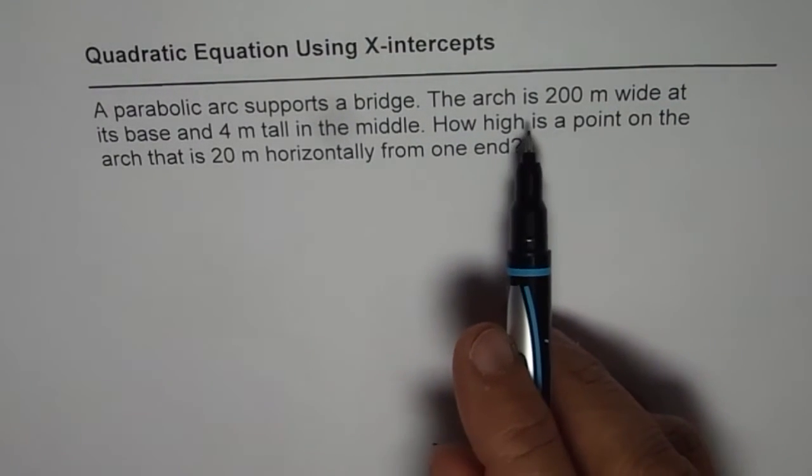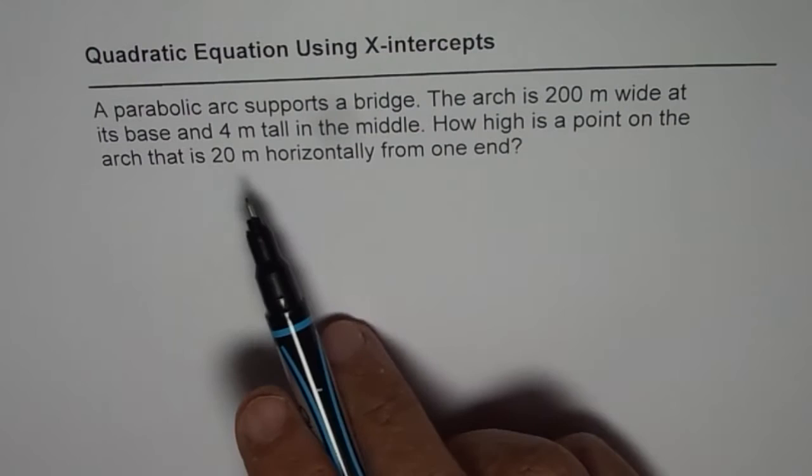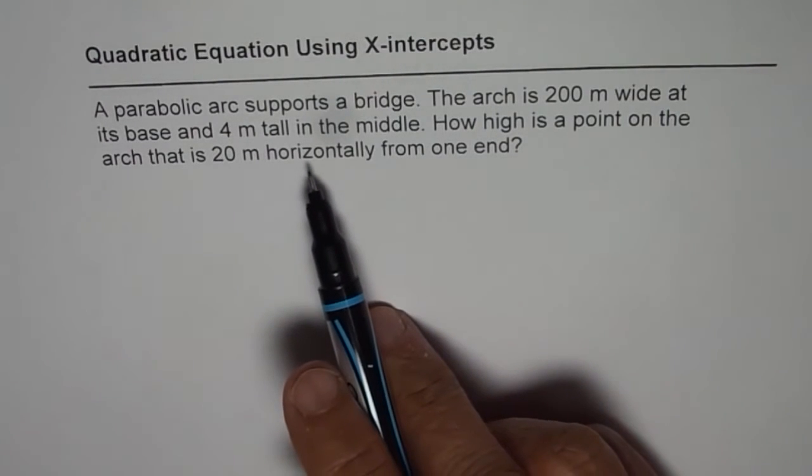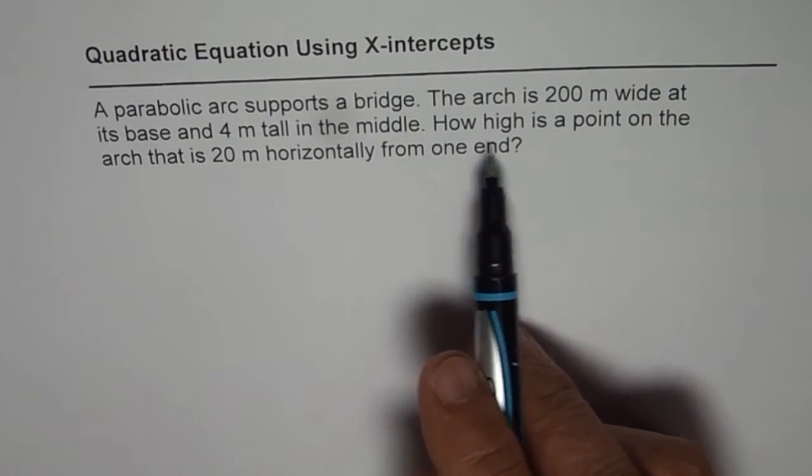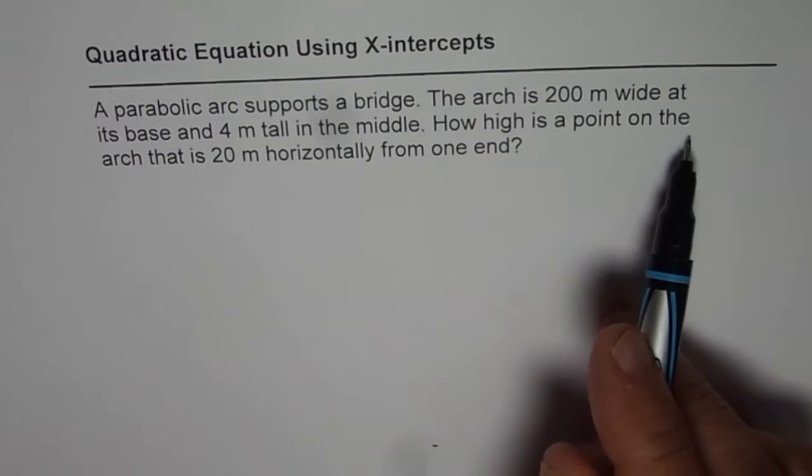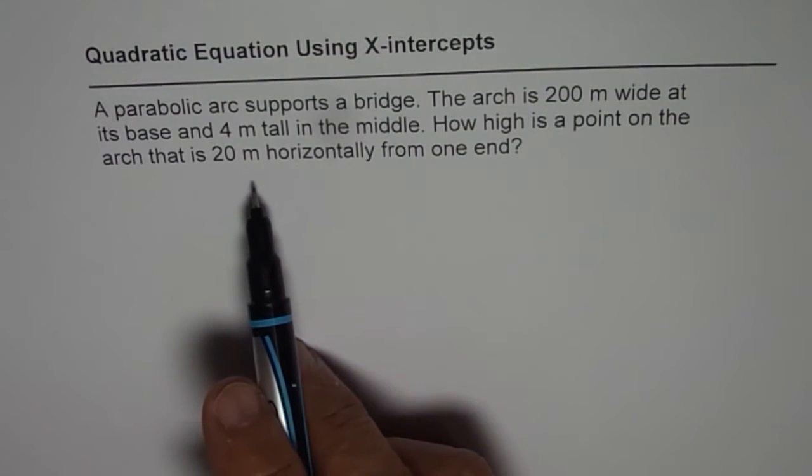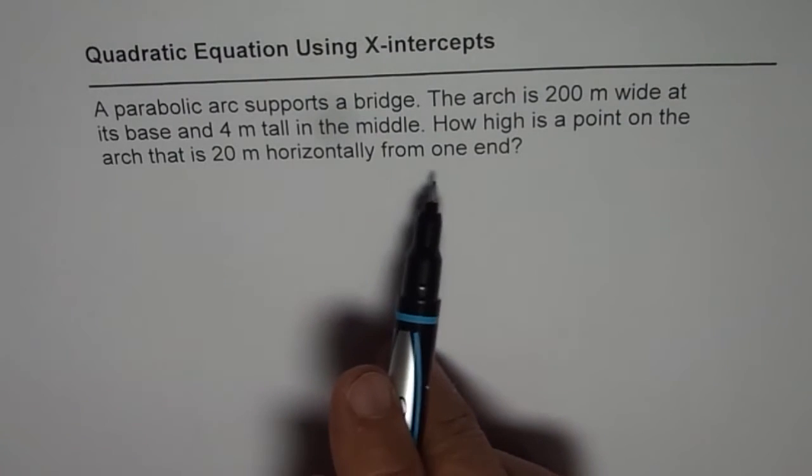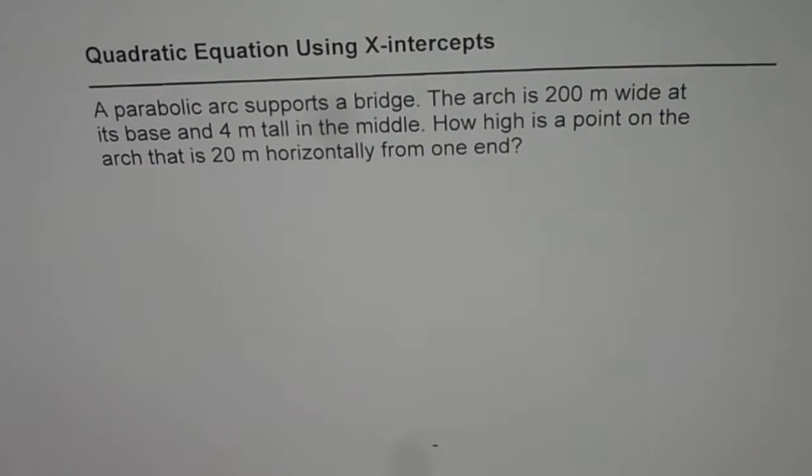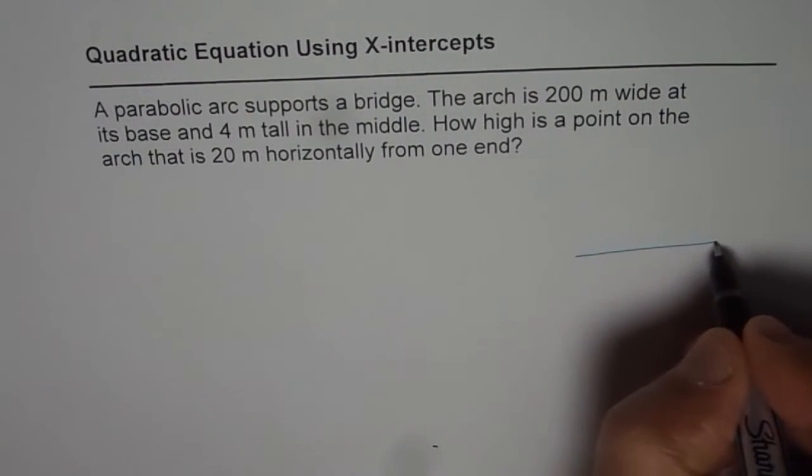The arc is 200 meters wide at its base and 4 meters tall in the middle. How high is a point on the arc that is 20 meters horizontally from one end? So let's first sketch the diagram.